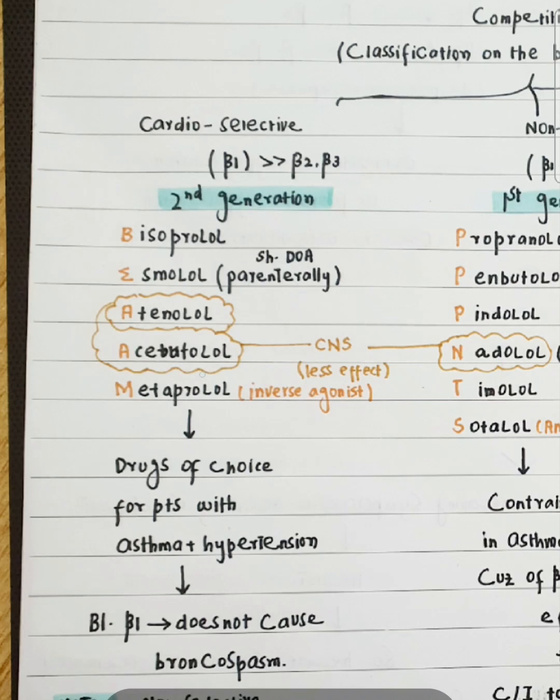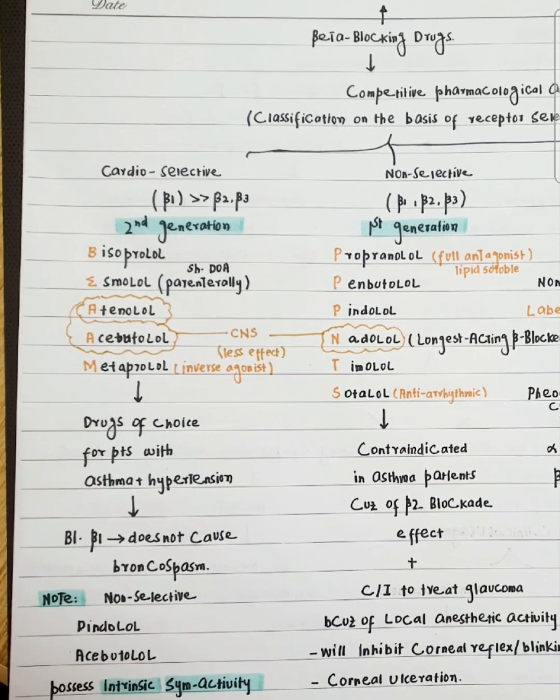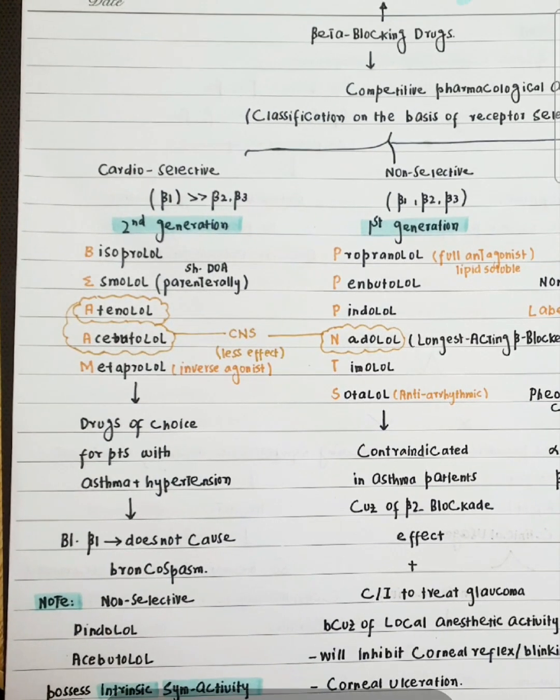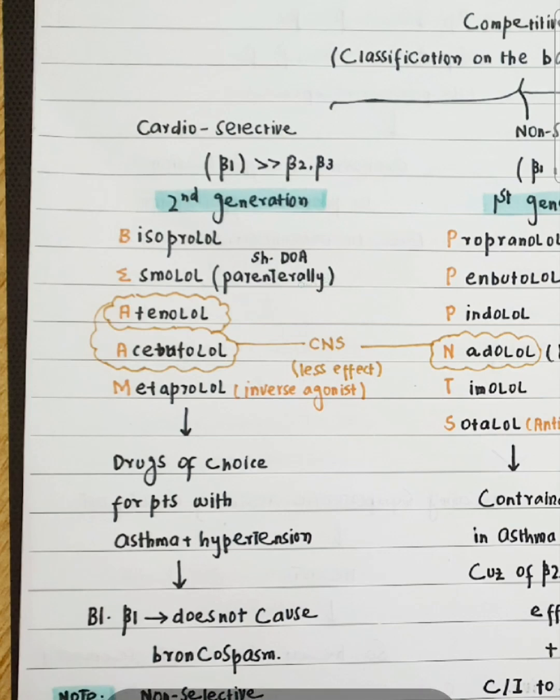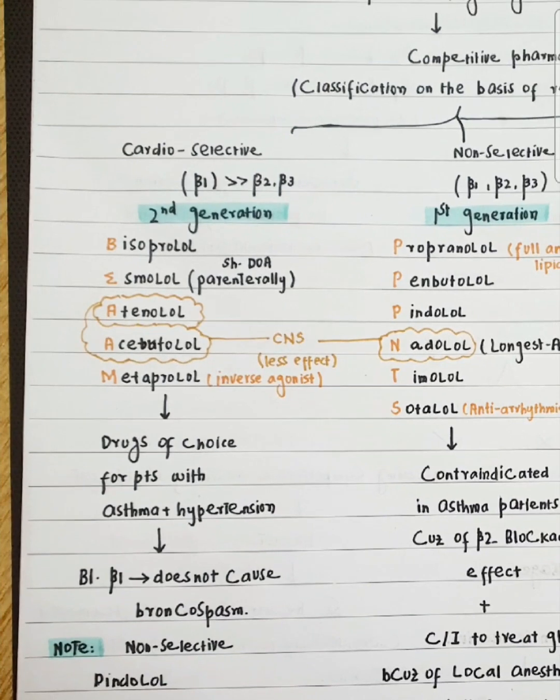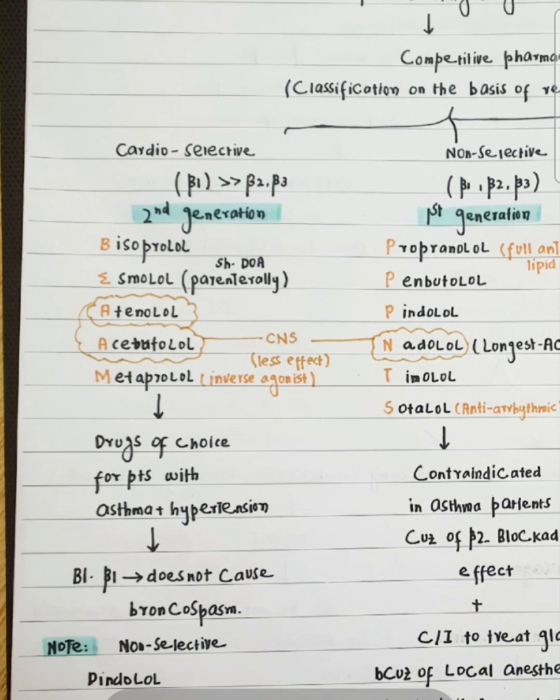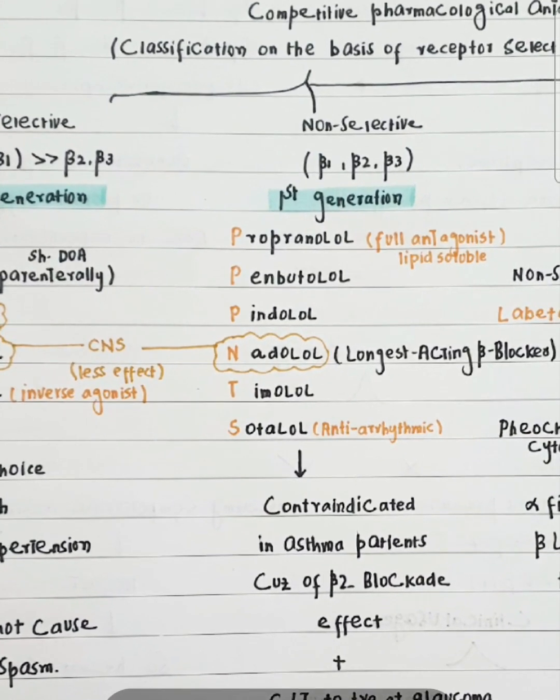BEAM is for Bisoprolol, Esmolol, Atenolol, Acebutolol, and Metoprolol. Esmolol is given parenterally only, whereas the other beta-blocking drugs can be given for chronic oral use, like with hypertension. Esmolol has a short duration of action. These cardioselective drugs are the drugs of choice for patients with asthma and hypertension.